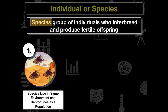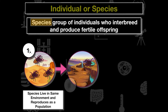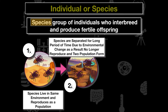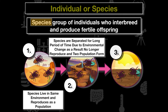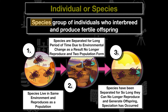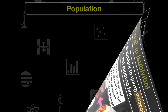When we think about how species speciate, consider species living in the same environment that encounter an environmental change separating them. Over time, they undergo physiological or morphological changes. For example, a canyon separates two populations, and eventually when they come back into contact they can no longer reproduce — they've speciated. Species must be able to produce fertile offspring, and we'll discuss this more in the evolution unit.